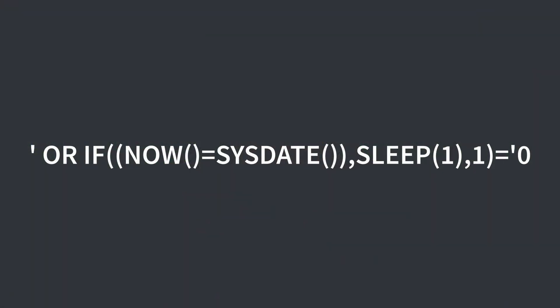The payload works, but why? Let's break it down. This IF function takes three arguments: a conditional check, a value to return if the condition is true, and a value to return if the condition is false. If the condition is true, the SLEEP function is executed for one second and returns a value of zero. If the condition is false, a one is returned. This returned value is then compared to a zero — so effectively, a true condition results in OR 0 equals 0, which is OR true.